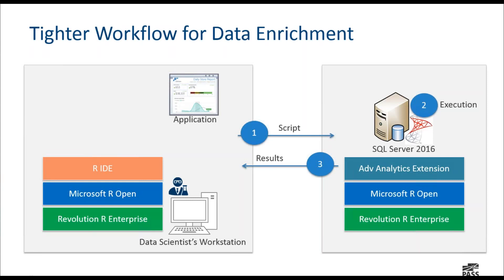Getting data enrichment and insight into data is now much faster and easier. On one hand you have R Open on the application side, and on the other hand you have R Revolution on the server side. There are two versions of R available with SQL Server 2016. One is Open, which comes free and is available in all editions. The other is R Revolution Enterprise, which comes with the Enterprise edition and enables high scalability and in-memory statistical analysis. This makes understanding the data much easier and closer.